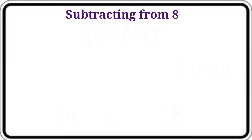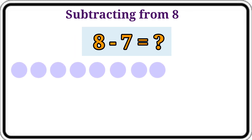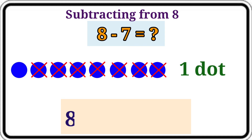Let's see the next question: 8 minus 7. Let's count the dots that are not crossed. Here 1 dot. So the answer is 1. 8 minus 7 is equal to 1.